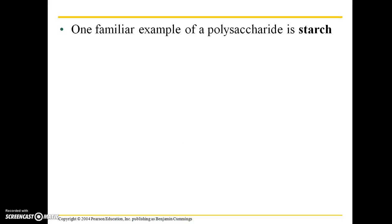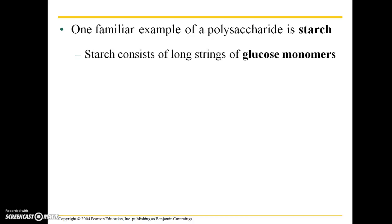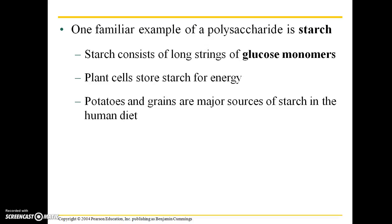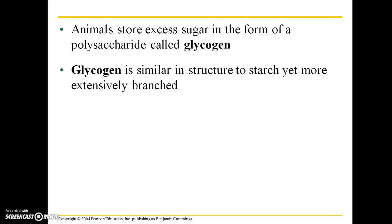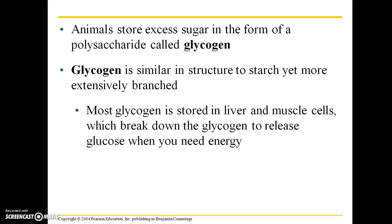A familiar example of a polysaccharide is starch. It consists of long strings of glucose monomers. Plant cells store starch for energy, and potatoes and grains are major sources of starch in the human diet. Animals store excess sugar in the form of a polysaccharide called glycogen, which is similar in structure to starch yet more extensively branched. Most glycogen is stored in liver and muscle cells, which break down the glycogen to release glucose when you need energy — for example, during exercise.